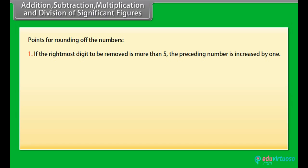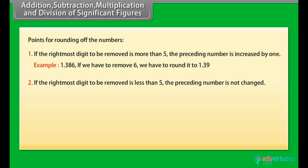If the rightmost digit to be removed is more than 5, the preceding number is increased by 1. Example: 1.386. If we have to remove 6, we have to round it to 1.39. If the rightmost digit to be removed is less than 5, the preceding number is not changed. Example: 4.334. If 4 is to be removed, then the result is rounded up to 4.33.